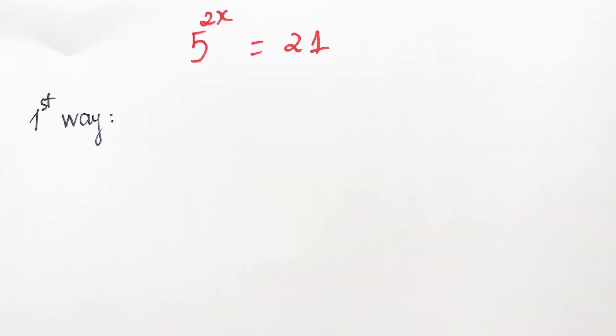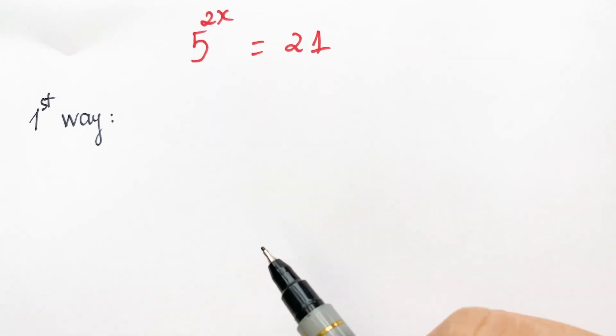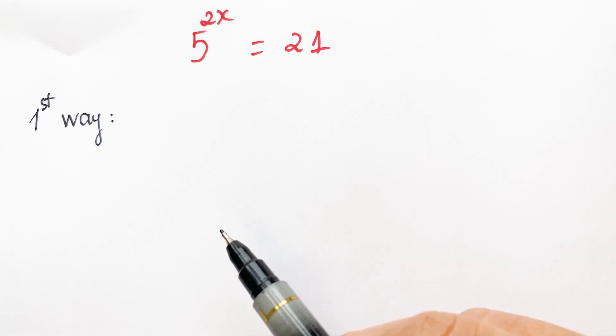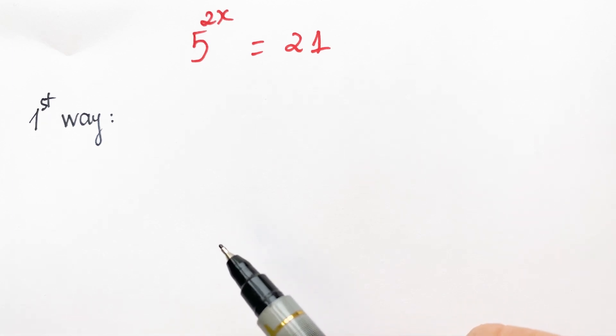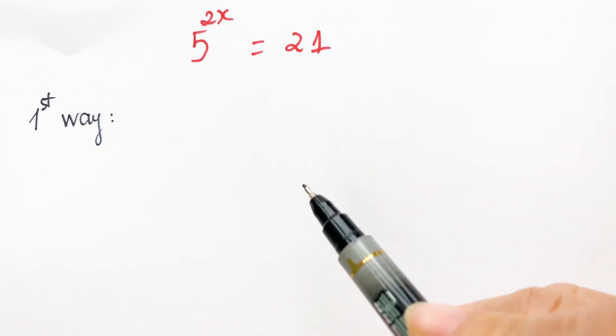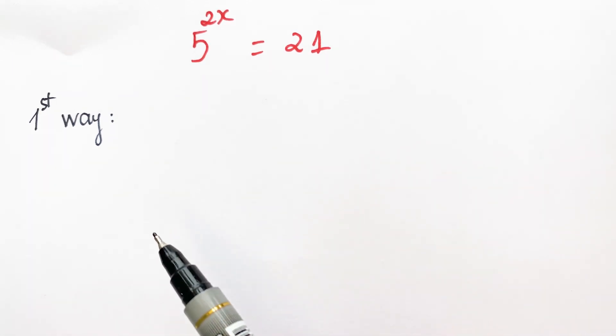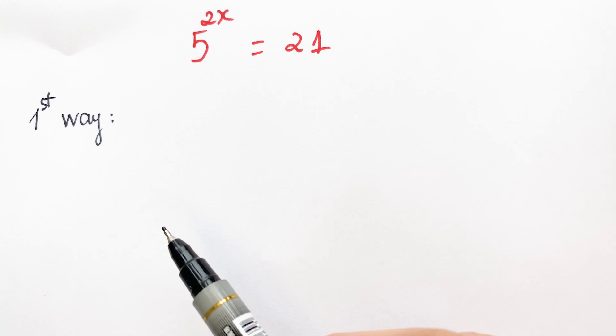Hello everyone, today we will solve the exponential equation 5 to the power of 2x is equal to 21. We'll look at this the first way.